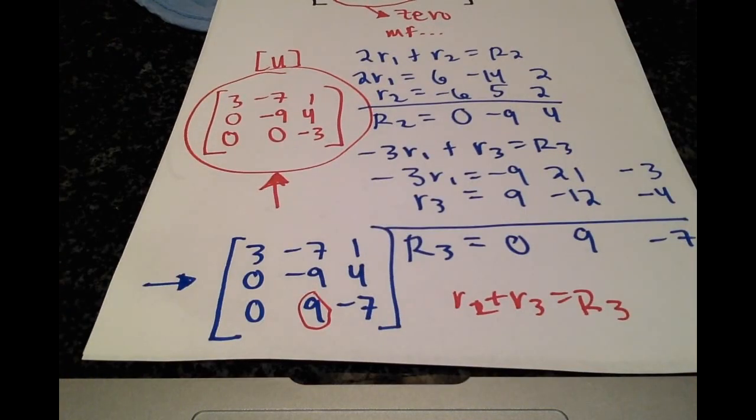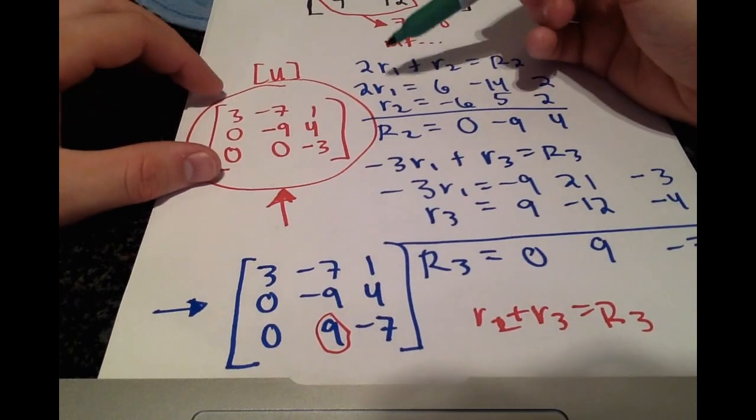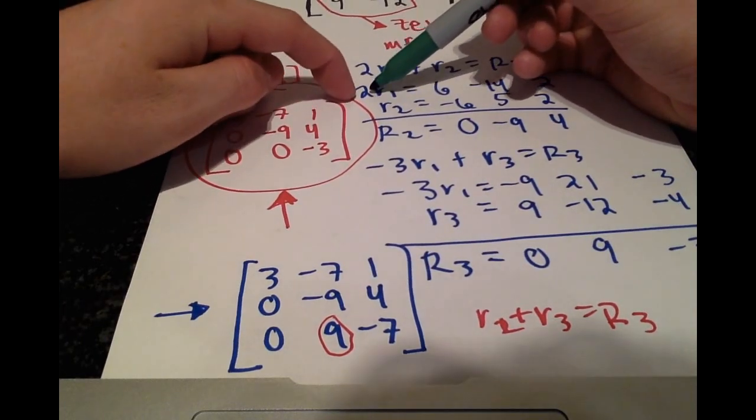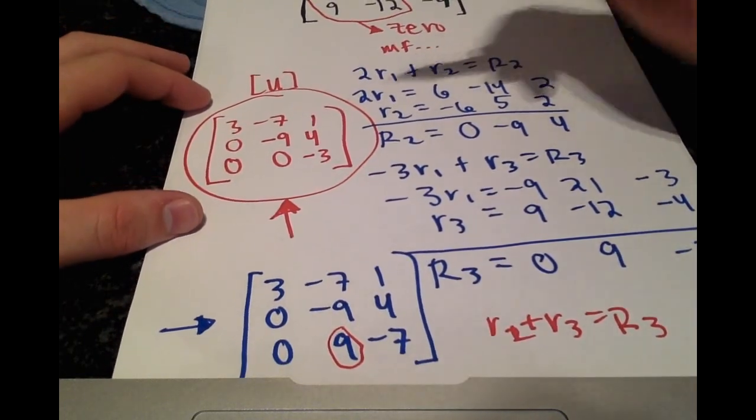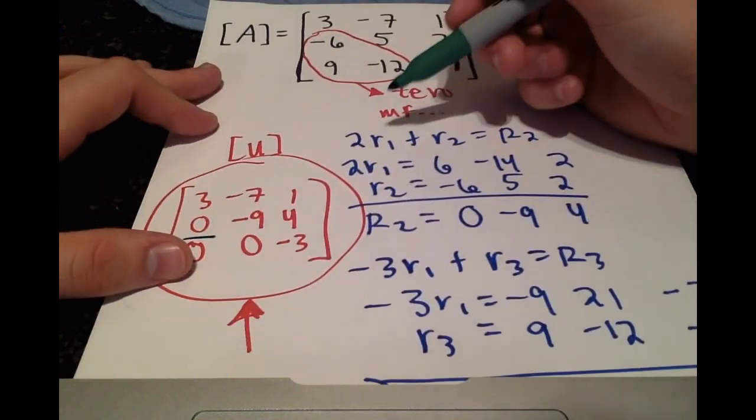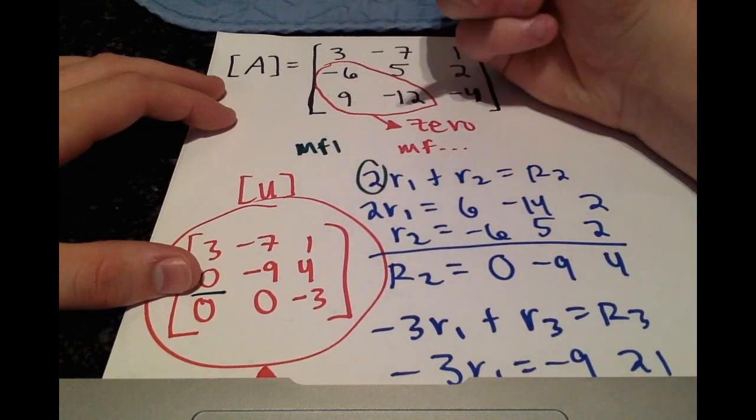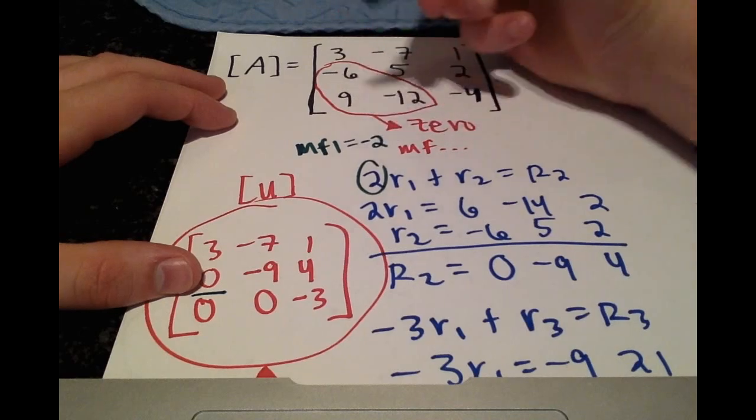And this is the important part, the multiplication factors, which we get based on the row operations. So notice that we multiplied row 1 by 2 to get rid of the term here and create a 0. So we multiplied it by 2. So our multiplication factor 1 is going to be the negative of that, negative 2.